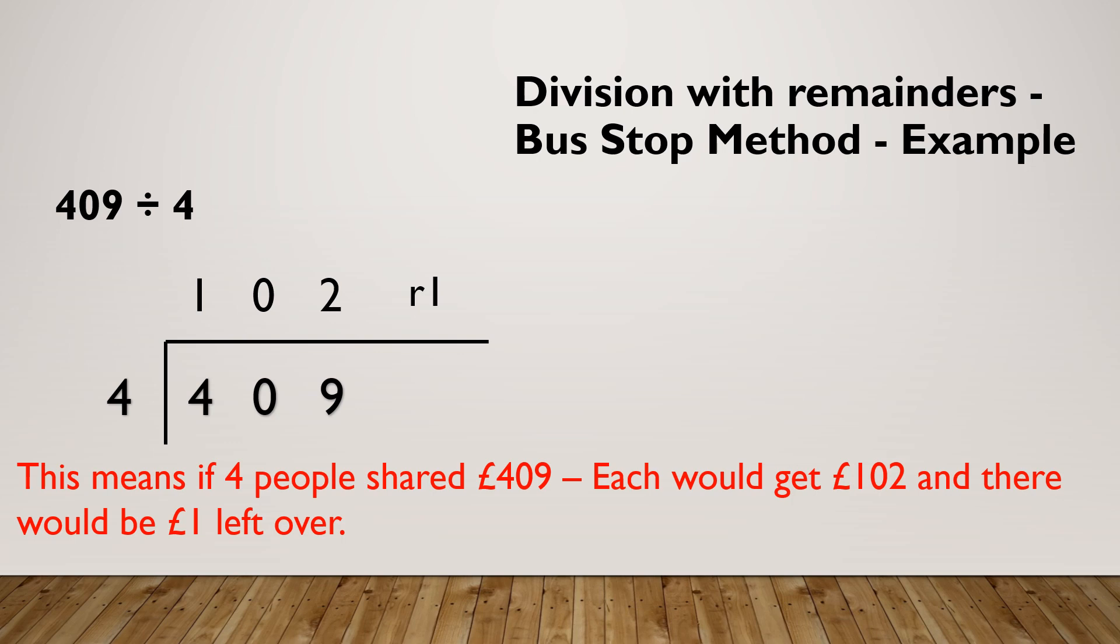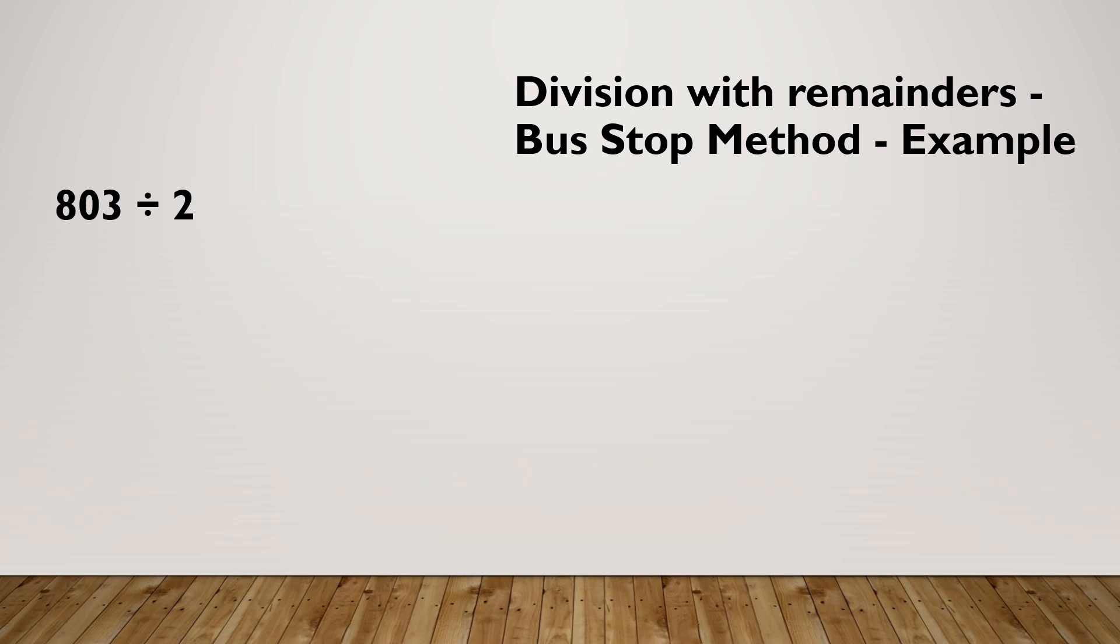Let's look at another example. 803 divided by 2. My 803 goes inside, my 2 goes outside. How many 2's in 8? There's 4. How many 2's in 0? There isn't any. How many 2's in 3? There's 1, remainder 1.